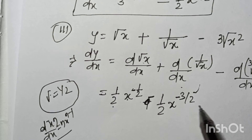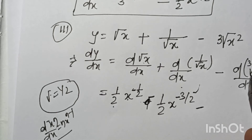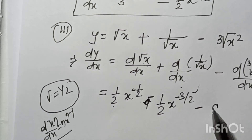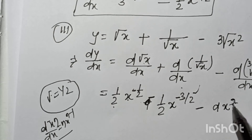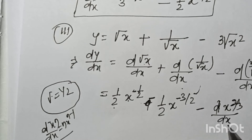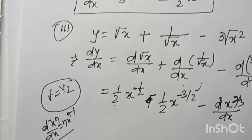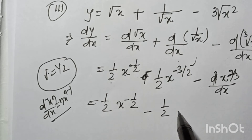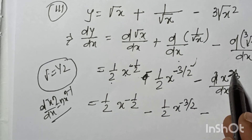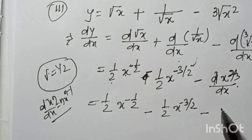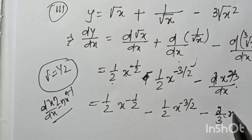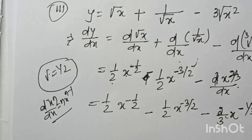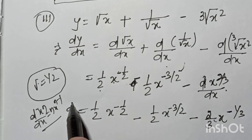The third term: ∛(x²) equals x^(2/3), so its derivative is 2/3 into x^(2/3 − 1) which is 2/3 · x^(−1/3). So finally, dy/dx equals 1/2 · x^(−1/2) minus 1/2 · x^(−3/2) minus 2/3 · x^(−1/3).